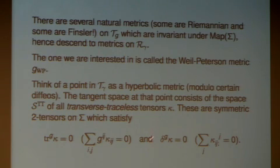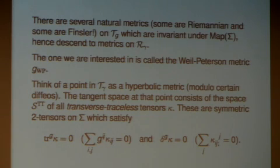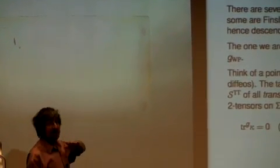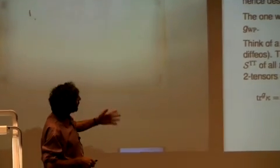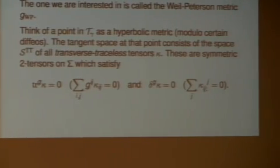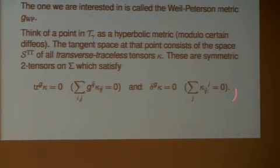These are symmetric two-tensors which are traceless — the diagonal entries are zero — and the divergence of that is zero. Saying that you are traceless means, in some sense, you're normalizing the area: if you have hyperbolic metrics, they all have the same area, so this traceless condition means you're choosing metrics of the same area. And satisfying the divergence condition means you're transverse to the actual diffeomorphism orbit. This is the tangent space, and here's what the metric is.